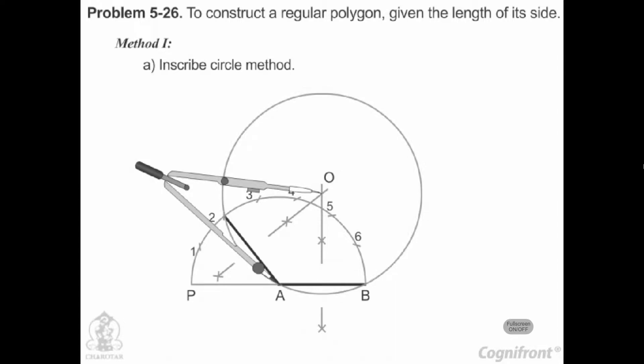describe a circle. With radius AB and starting from B, cut the circle at points C, D, etc., up to 2.